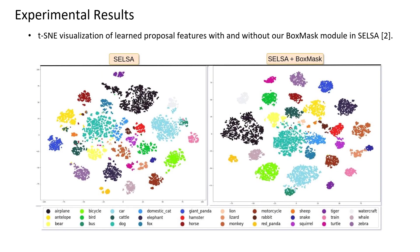We also visualize learned proposal features of SELSA without and with our box mask module. On the left, with SELSA only, object proposals that either look alike — such as domestic cat and dog — or objects with similar motion characteristics such as car and bus, are misplaced into an incorrect cluster. On the contrary, when our box mask is incorporated into SELSA, we observe compact clusters which severely reduce misclassification of object proposals.